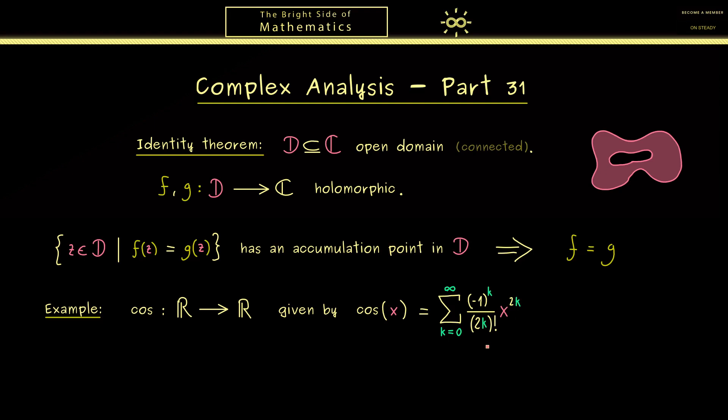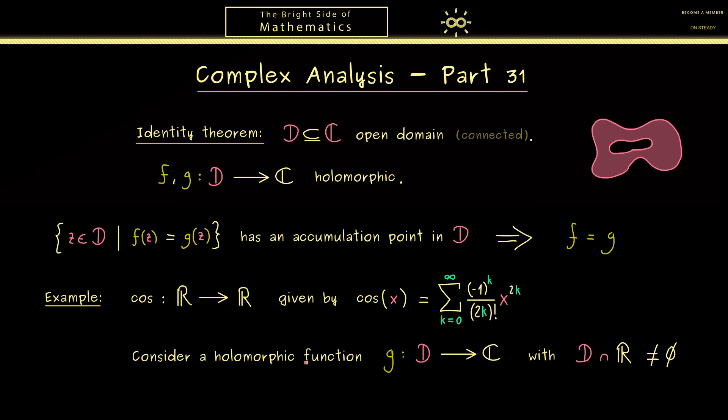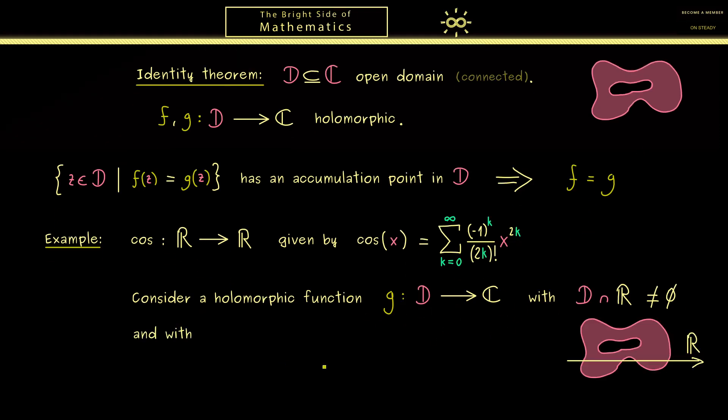With this we get a well-defined C infinity function on R. However, now let's consider a holomorphic function g defined on an open domain D. In addition, we also have that D has real numbers, so the intersection with the real number line should be non-empty. This is needed if we want to extend the cosine function to the domain D.